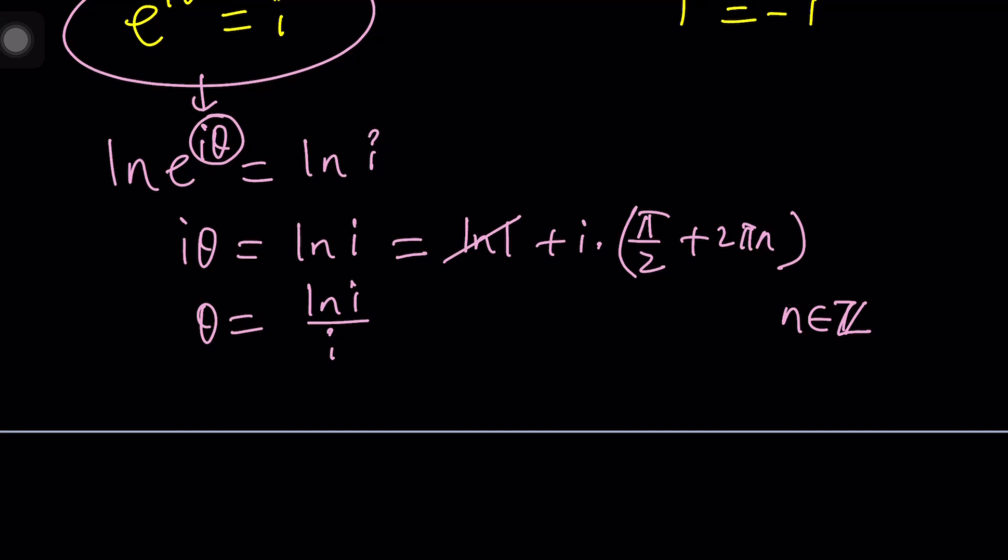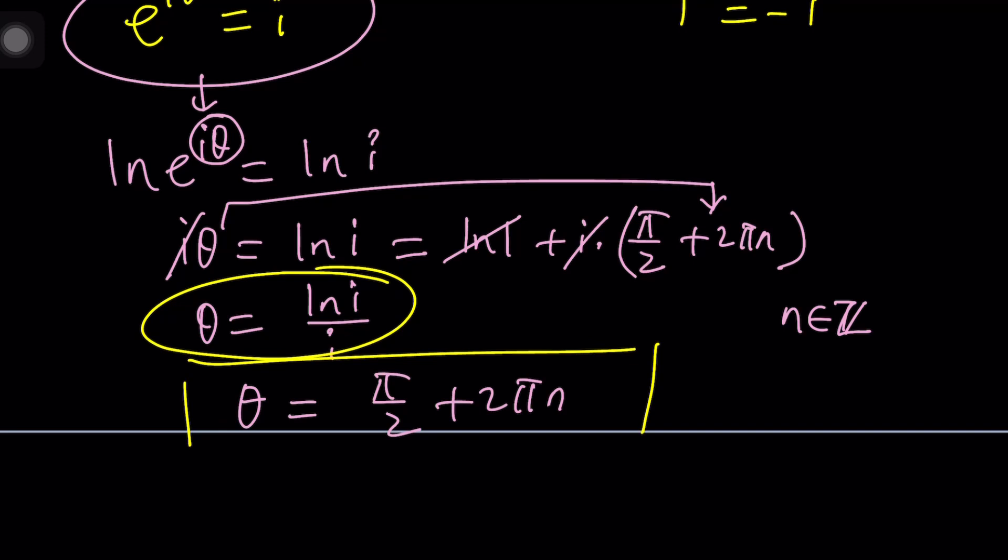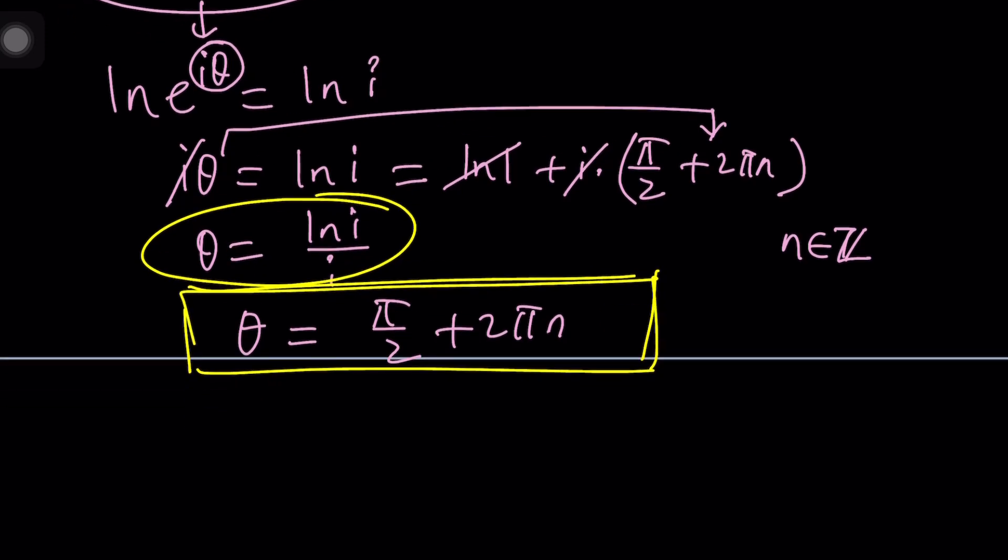And this is iθ. So if I cancel out the i, θ would be that, right? Looks like θ is going to be, from here, pi over 2 plus 2πn. And see how ambiguous this is as opposed to this one. This is actually a nicer result. Well, they should be the same thing, but there are multiple values.